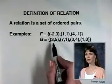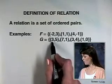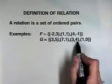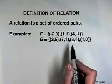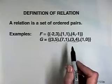In the set G, notice that this point (3, 5) and the point (3, 4) have the same x value, but have different y values. Therefore, this is not considered a function.